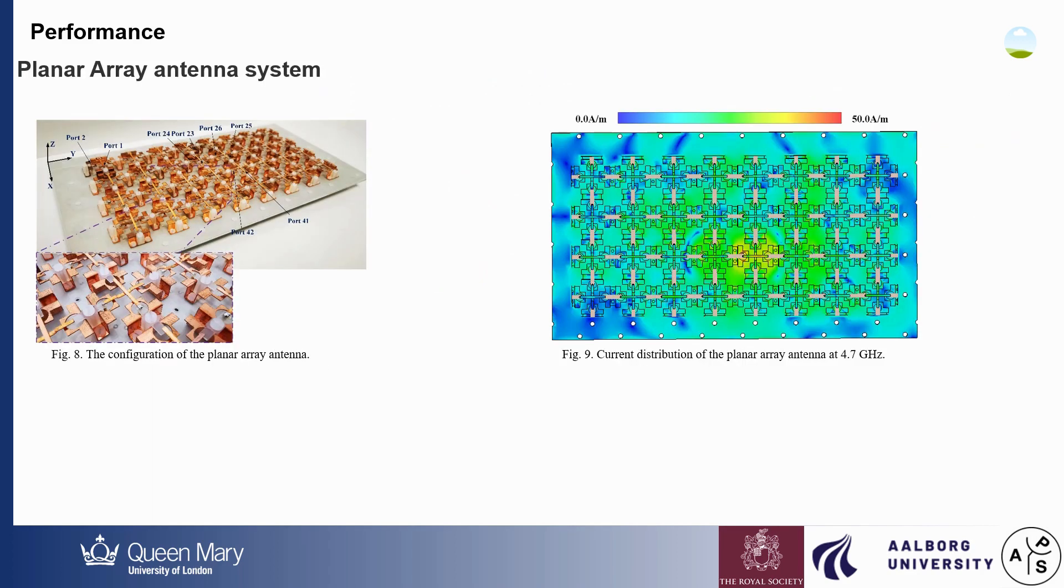The 4 by 8 planar array antenna is fabricated as shown in Figure 8. The current distribution of the planar array antenna is shown in Figure 9. We can see the weak induced current on the adjacent units.